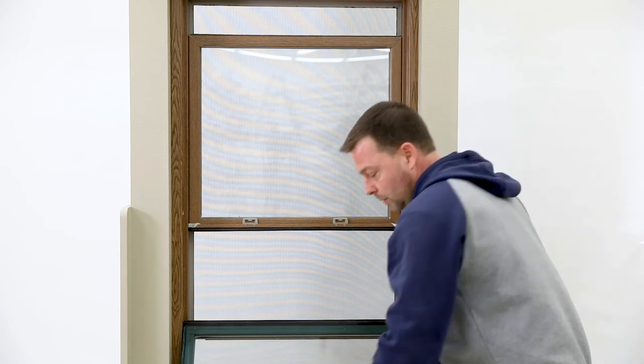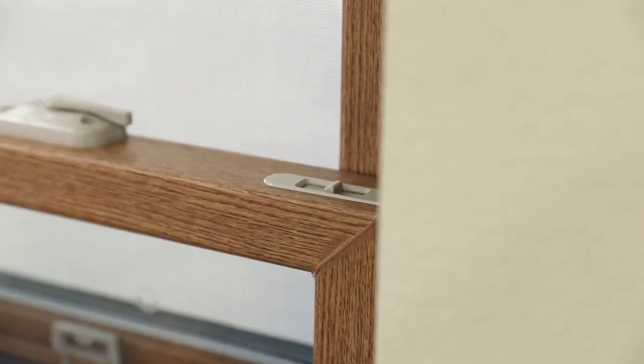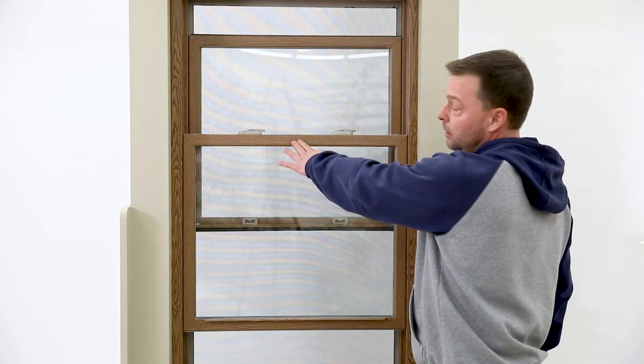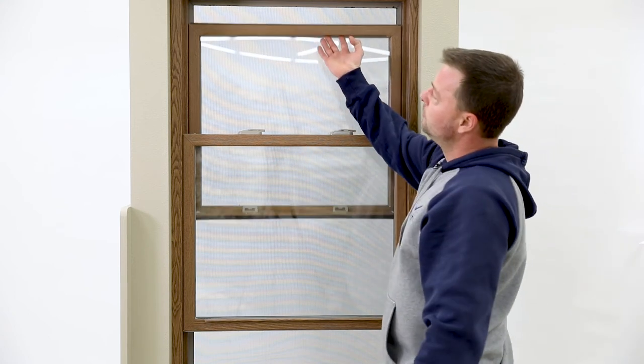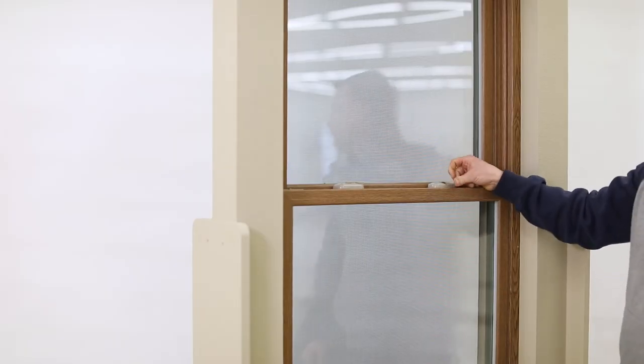At that time, you grab your bottom sash, pivot that up, making sure your tilt latches click and engage. Put your window back to its natural position, close both sash, and lock your window.